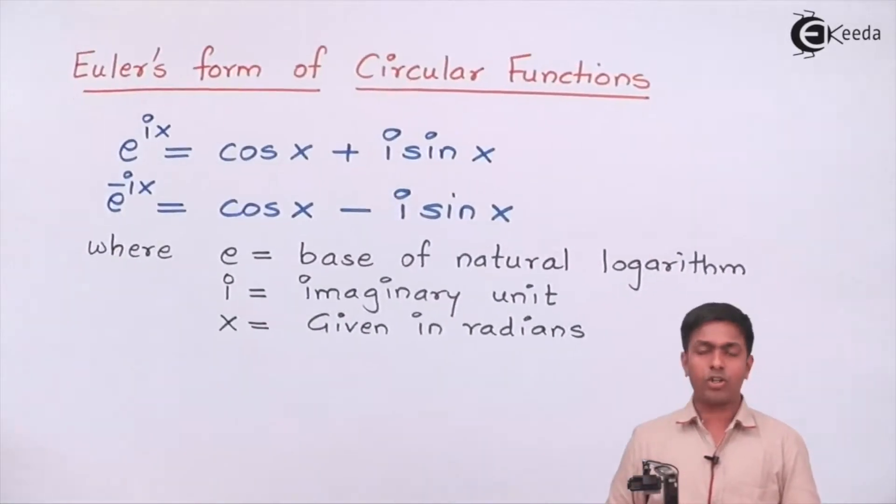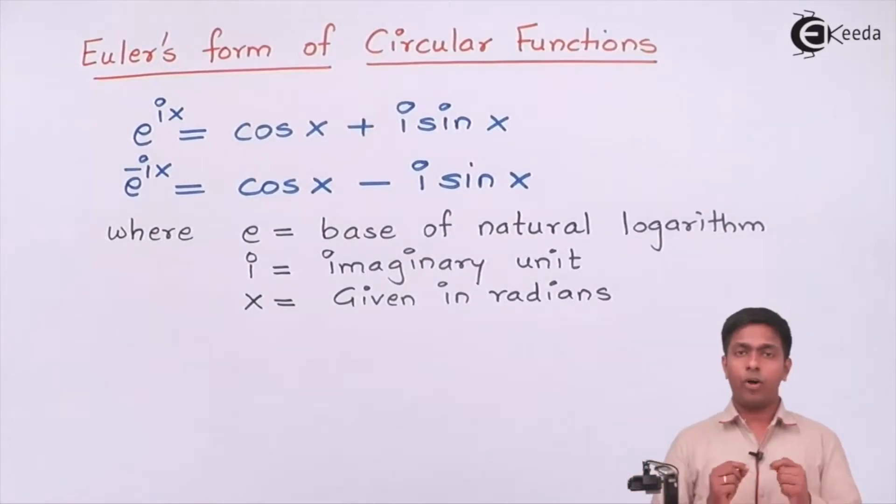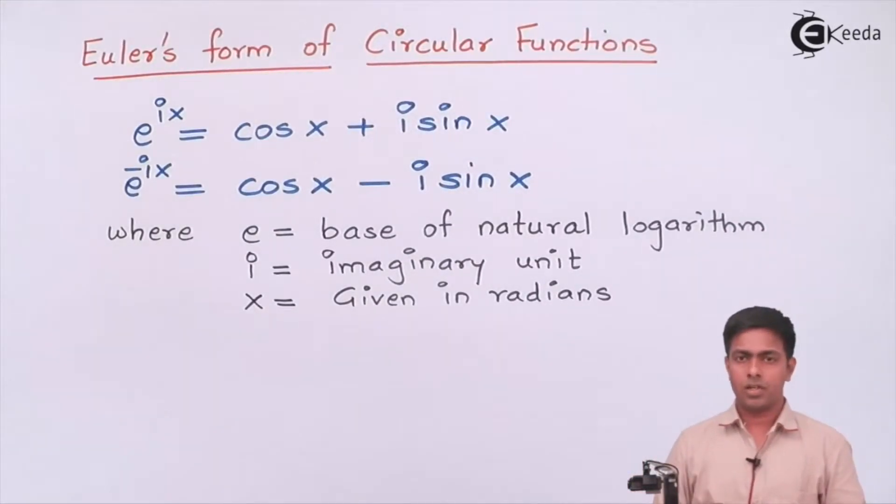What is the formula that he has given? He has given us the relationship between circular functions, which are also known as trigonometric functions, and exponential functions. He derived that relationship and it was one of the most wonderful inventions of mathematics. Here on the screen you can see the formula that Euler has proposed.